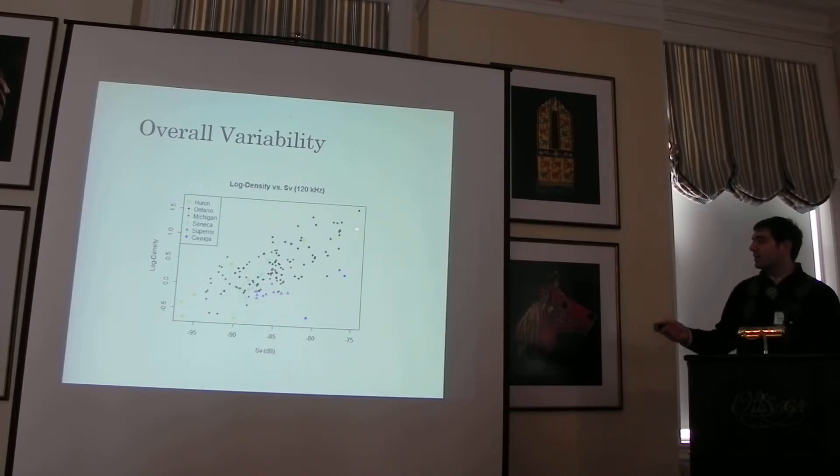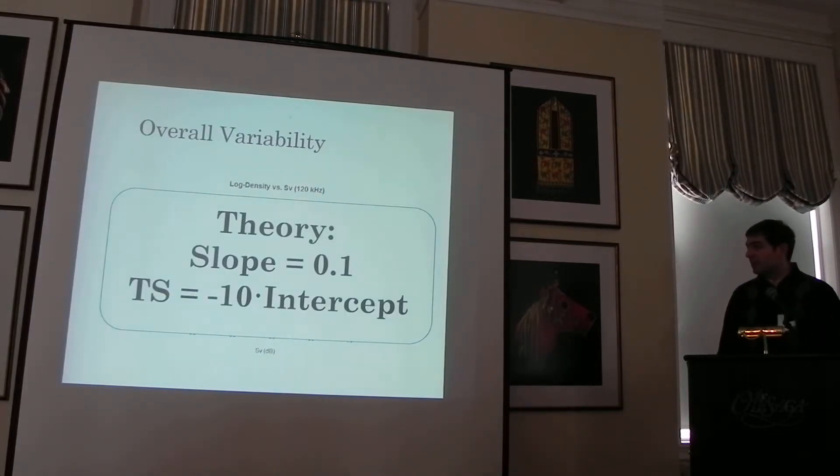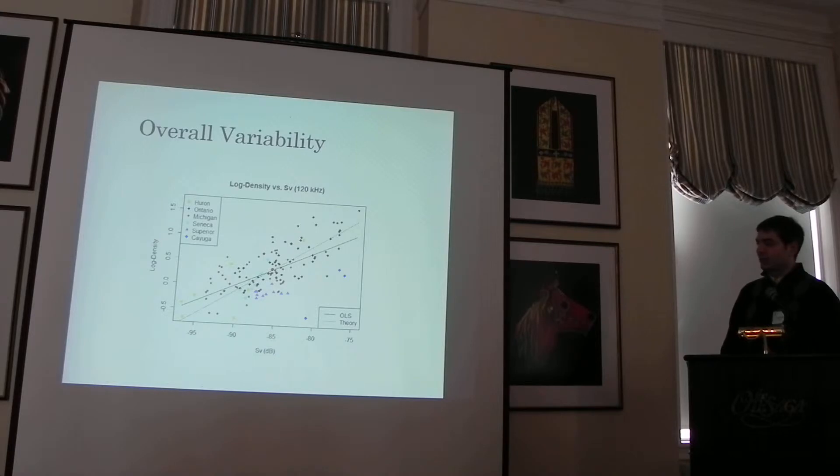I see a really nice correlation here. The colors and shapes represent the different lakes involved in the study. It has an R of about 0.69, so a pretty good correlation. We also would expect from theory to see a slope of 0.1 in this relationship. And then the intercept is basically a proportion of the target strength. So you see differences there. That's what you're looking at, the target strength. This is a log on the y-axis.